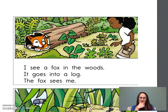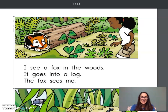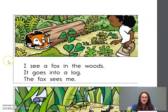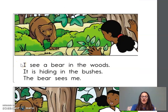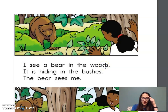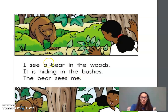What is a fox? Yes, it's this animal. Good job to use the picture. I see bugs in the woods. They crawl in the grass. The bugs see me. I see a bear in the woods. It is hiding in the bushes. The bear sees me. I know the word woods, hiding, bushes. What is a bear? Yes, it's this animal. Good job to make a connection with the words and the picture.